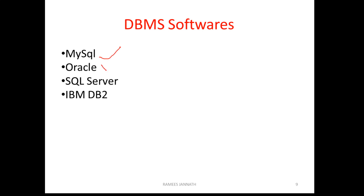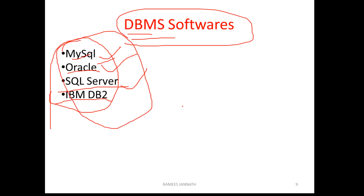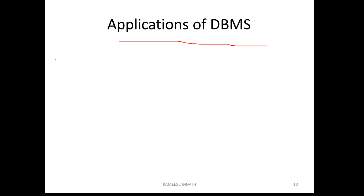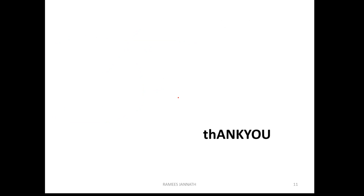So DBMS software examples include MySQL, Oracle, SQL Server, and IBM DB2. These are examples of DBMS software. Applications of DBMS are found in almost every field — airlines, railway, telecommunications, and the medical field. So thank you, that's all in this video. In the next video I will discuss about the characteristics of DBMS. Till we meet next time, bye.